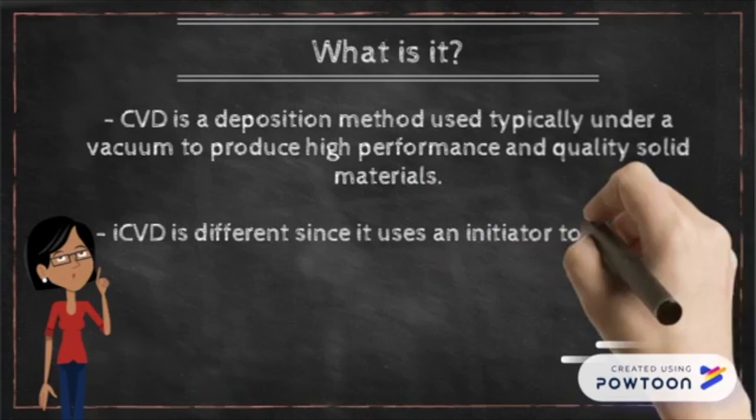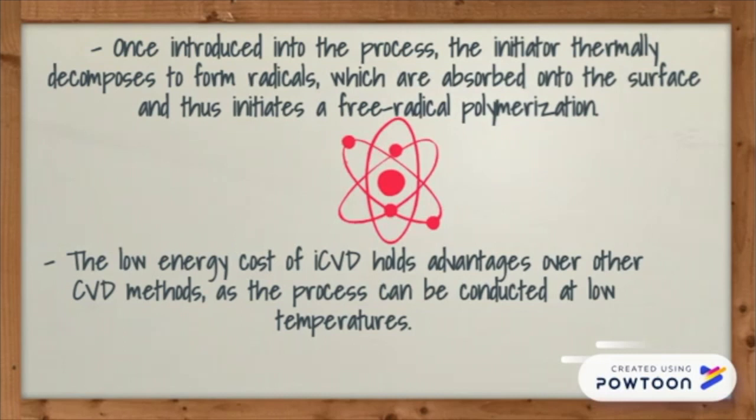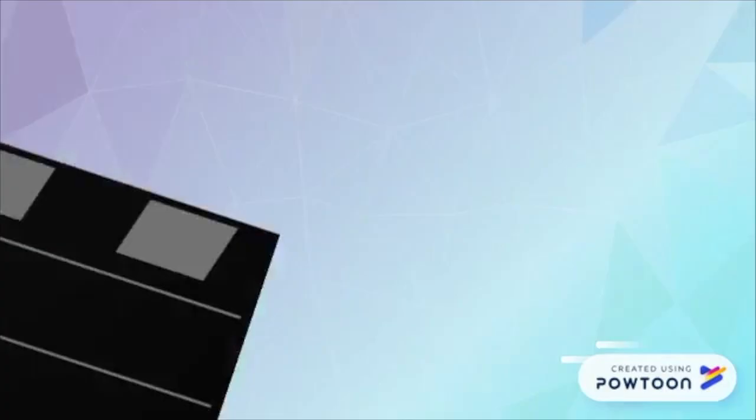ICVD is different since it uses an initiator to start the polymerization process. Once introduced, the initiator thermally decomposes to form radicals which are absorbed onto the surface and thus initiates a free radical polymerization. The low energy cost of ICVD holds advantages over other CVD methods as the process can be conducted at low temperatures.